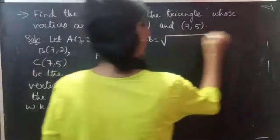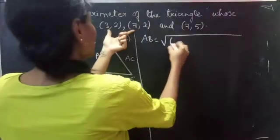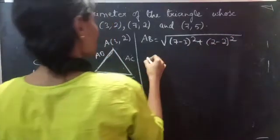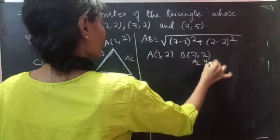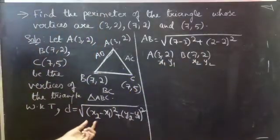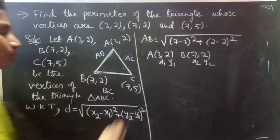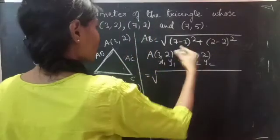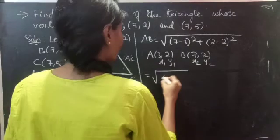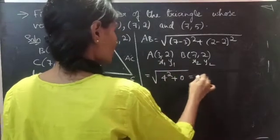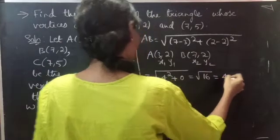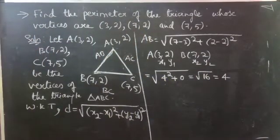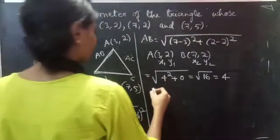AB equals square root of (7 minus 3) whole square plus (2 minus 2) whole square. Here A is (3, 2) and B is (7, 2), so we substitute the values of x1, x2, y1, and y2. This equals square root of 4 squared plus 0, which is square root of 16, so AB equals 4.